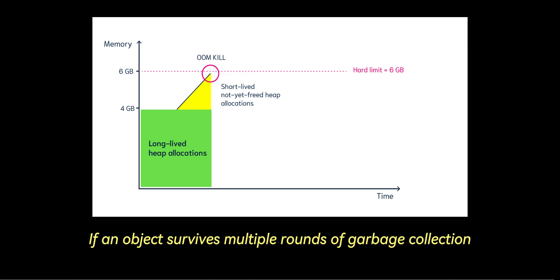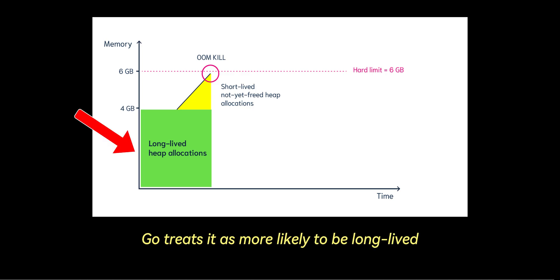If an object survives multiple rounds of garbage collection, for example, it's still reachable after a few garbage collection cycles, Go treats it as more likely to be long-lived. These objects are moved logically by not revisiting them as frequently since they're assumed to be in use for the program's duration.